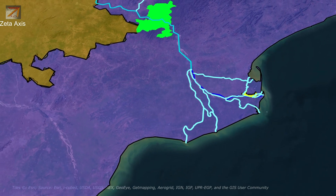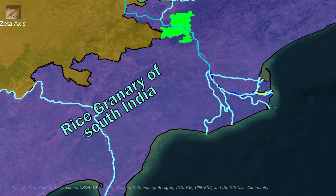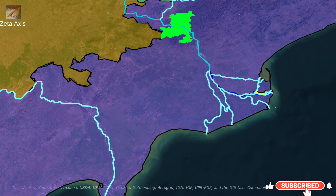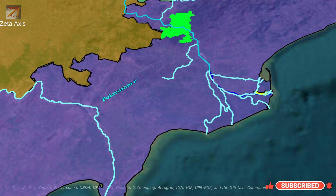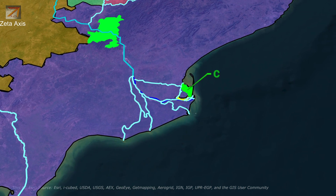The Godavari delta, along with the Krishna river delta, is a very important rice-producing region and is therefore called the rice granary of South India. The Krishna-Godavari basin is also a nesting site of endangered olive ridley sea turtles. The Godavari River is connected with Krishna River by the Polavaram right bank canal. The Kolleru Lake lies within this delta and is connected to both Krishna and Godavari rivers via a large number of canals. Along the Godavari delta, there is Koringa mangrove forest, the third largest mangrove forest in the country, renowned for reptiles.